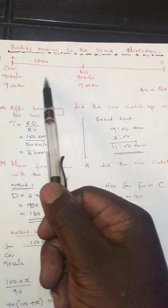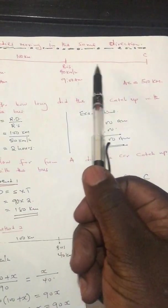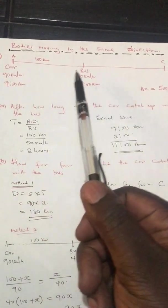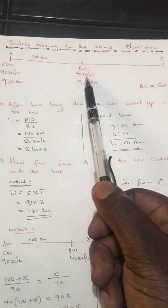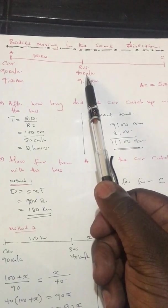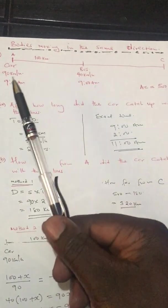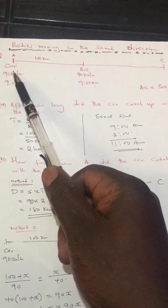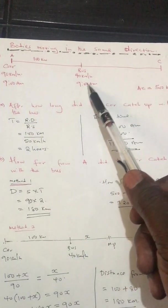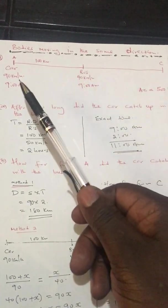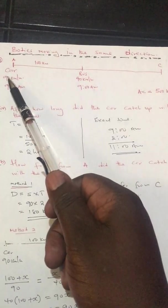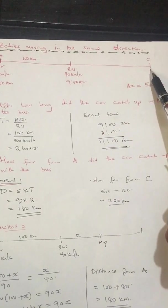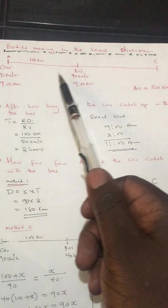Since they are moving in the same direction and the one behind has a higher speed, it will eventually reach a point where it overtakes the one ahead. The question is all about calculating the time it takes before the one behind catches up with the one in front, and the distance from the starting point to that meeting point.